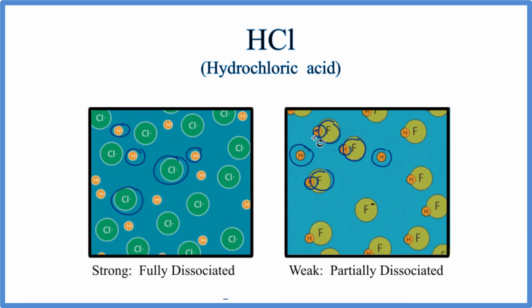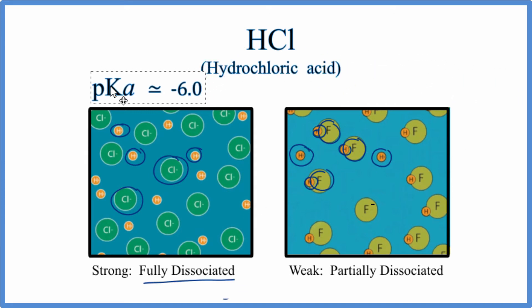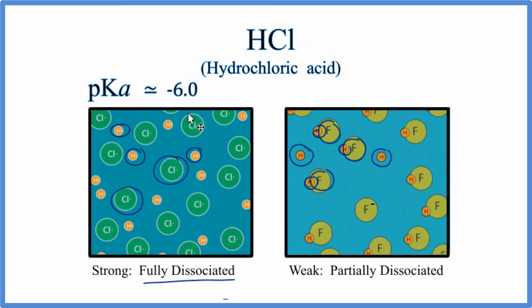Since hydrochloric acid is a strong acid, it'll fully dissociate. One way we can measure the strength of an acid is to look at pKa. If the pKa is less than zero, it's going to be a strong acid and will fully dissociate. For HCl, the pKa is minus 6.0 — that's less than zero. So hydrochloric acid is a strong acid that fully dissociates into its ions.